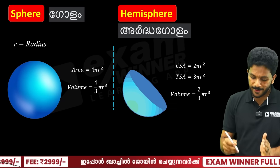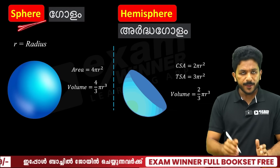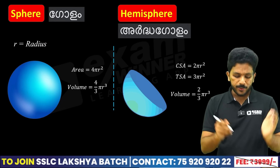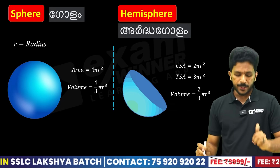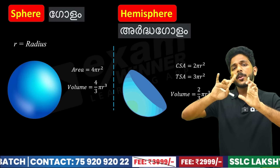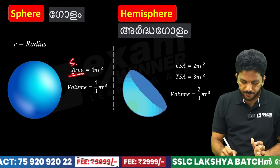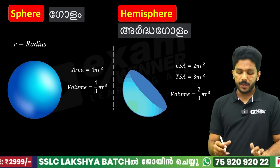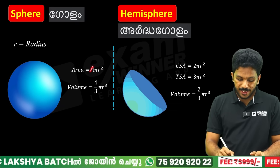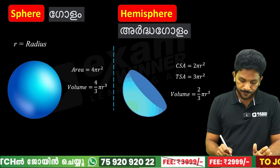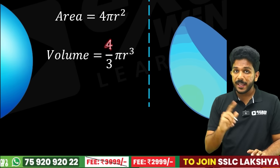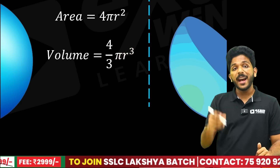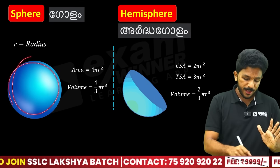The two simple shapes are sphere and hemisphere. A sphere is like a football or an orange — it is round. It has only radius R, no height or base. The surface area (TSA = CSA) is 4πR². The volume is 4/3 πR³.